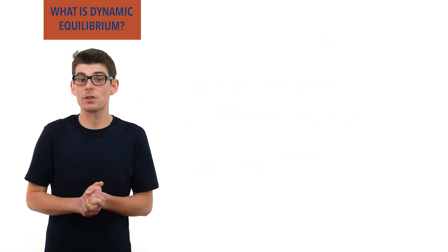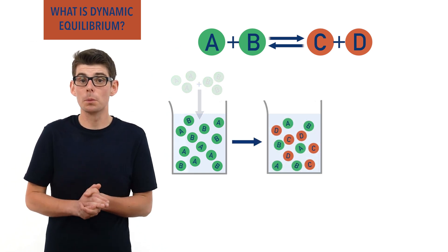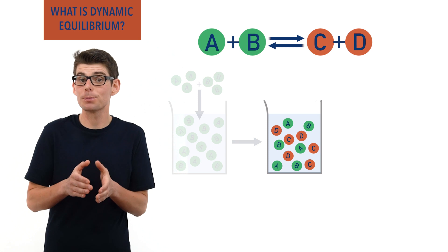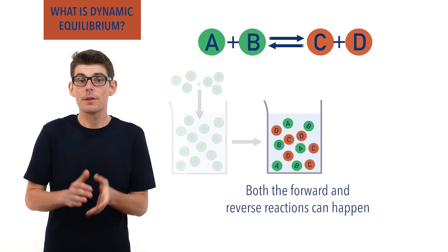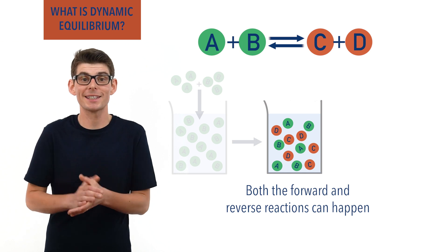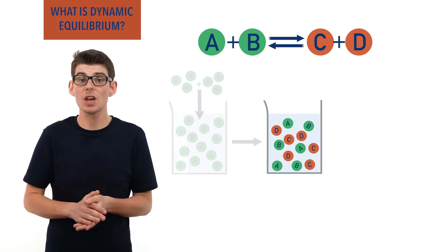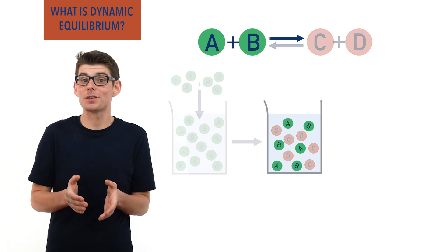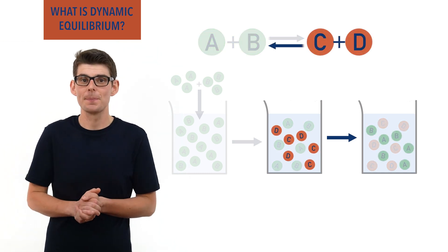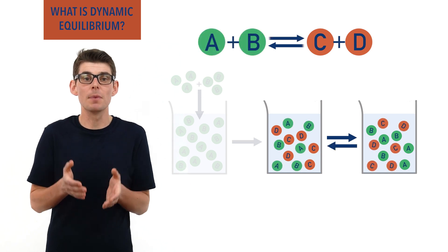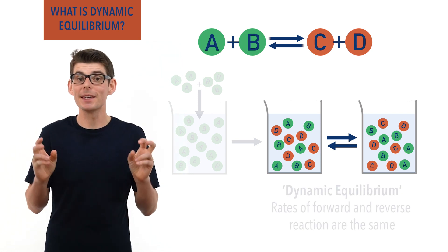For some reversible reactions, like the one just shown, if reactants are mixed together and start to form products, there will be a mixture formed that contains both the reactants and products of the forward reaction. This means both the forward and reverse reactions can now happen, and these reactants and products keep constantly reacting. If the forward and reverse reactions occur at the same rate, the amounts of all substances in the mixture will be constant, meaning there is no overall change in moles of reactants or products. When this is happening, the system is said to be in a state of dynamic equilibrium.